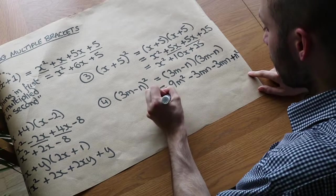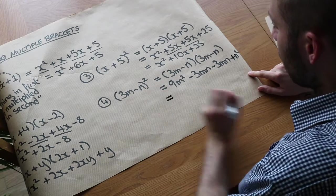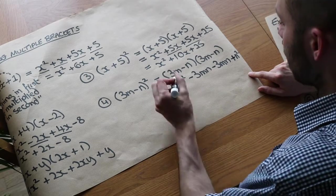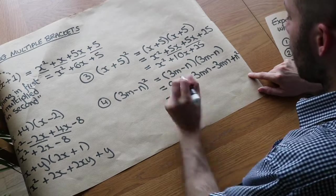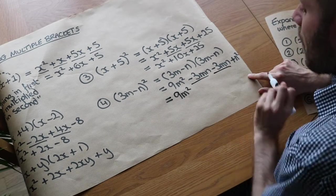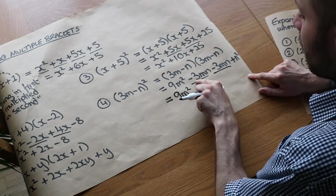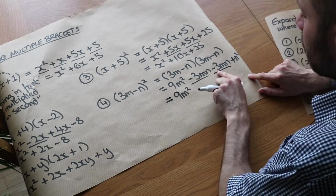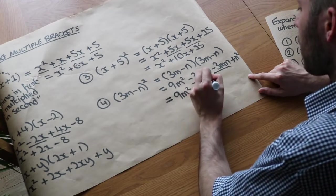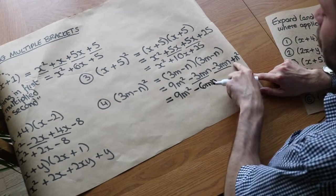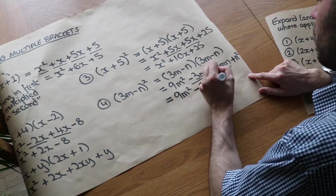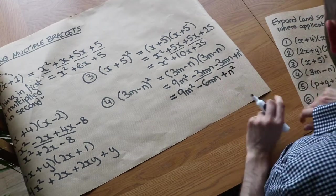Now we can collect like terms. There's no other m squared term so we leave 9m squared as it is. But we've got two mn terms: minus 3mn minus 3mn is minus 6mn. And then we've got only one n squared term, so it's plus n squared. The final answer is 9m squared minus 6mn plus n squared.